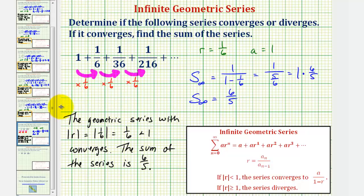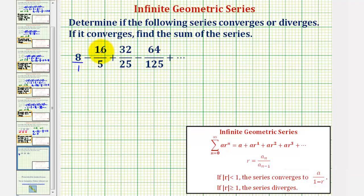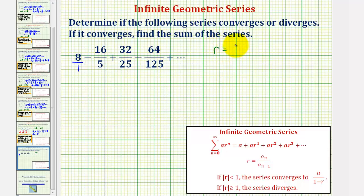Now let's look at a second example that's a little more challenging. We have an alternating series. If we write 8 as 8/1, notice how multiplying the numerator by 2 gives 16, 32, 64, and multiplying the denominator by 5 gives 5, 25, 125. So the signs do alternate, and therefore R, the common ratio, equals negative 2/5.